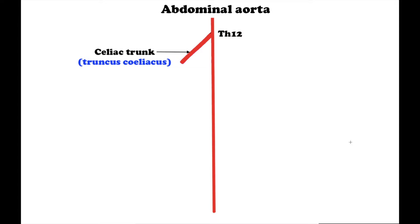Hi everyone, it's Schematic Matt and today we are going to talk about the unpaired branches of the abdominal aorta. When the aorta is already in the abdominal cavity, it is called the abdominal aorta, aorta abdominalis.